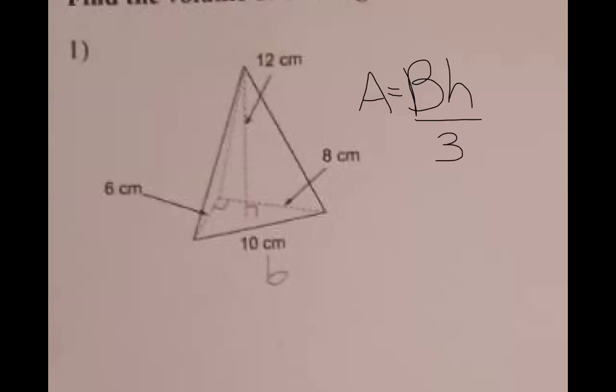So you first have to find the volume of the base, and in this case, the base is a triangle. The area of the base, that's what that capital B is in our formula. So the area of a triangle is the base of the triangle, little b, times the height of the triangle divided by two. We're going to make a list of variables there. So little b, little h.